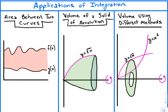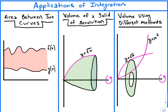The first thing you're going to be finding is the area between two curves. Before we were finding the area under f(x), and now we add another function and find the area between those two functions — we just subtract out the lower area.